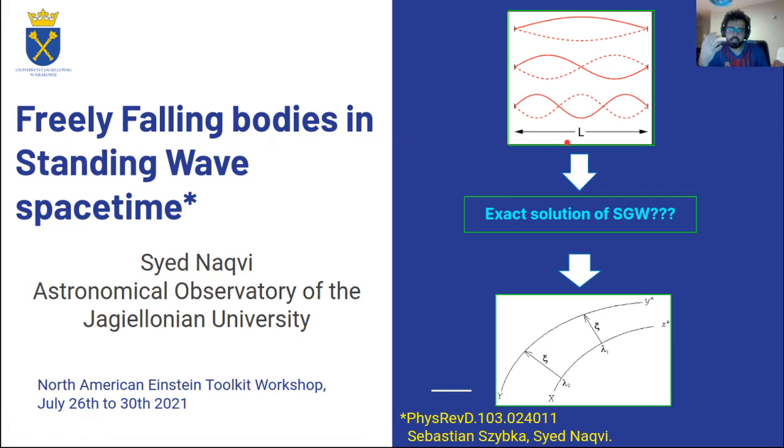We all know that in the mechanical setting as well as in the electromagnetic setting, there are standing waves that form antinodes and nodes. The idea is that are there standing gravitational waves, and more specifically, are there exact solutions to Einstein field equations which can represent standing gravitational waves and then to study how particles or how geodesics in such a spacetime would behave.